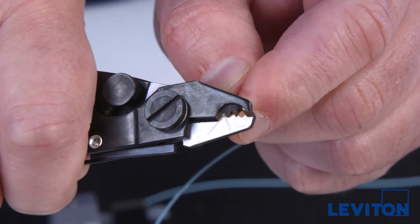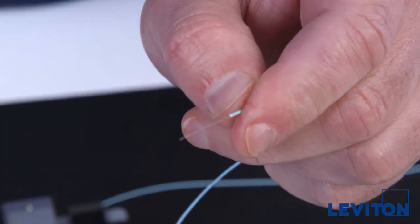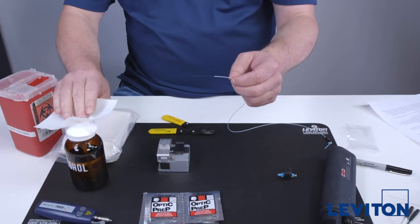Run the fiber stripper over the bare fiber, ensuring complete removal of the buffer and acrylite coating. Verify the acrylite coating has been removed from the fiber.